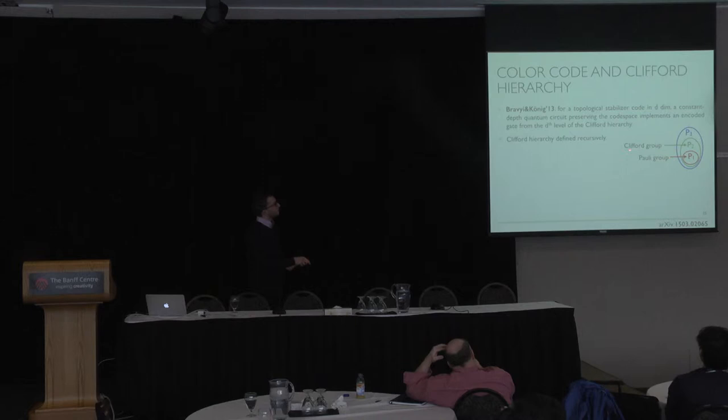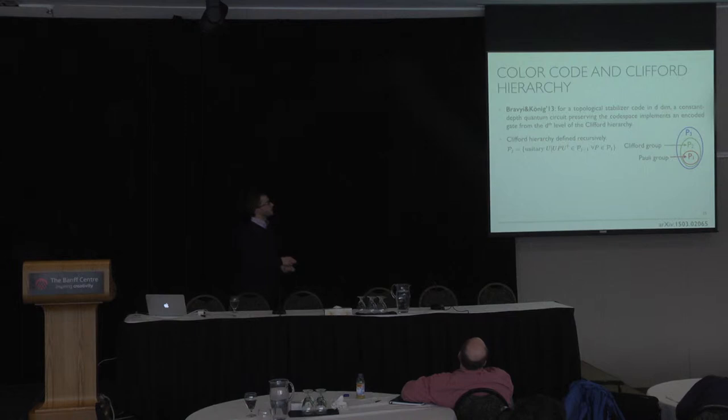So let's have a look at the Clifford hierarchy. It's defined recursively. First level is the Pauli group. Second level is the Clifford group. And in general, the jth level will be the set of all unitaries which take Paulis and map them to the j-1 level. Two examples of gates in the dth level of the Clifford hierarchy is the phase gate, Rd.